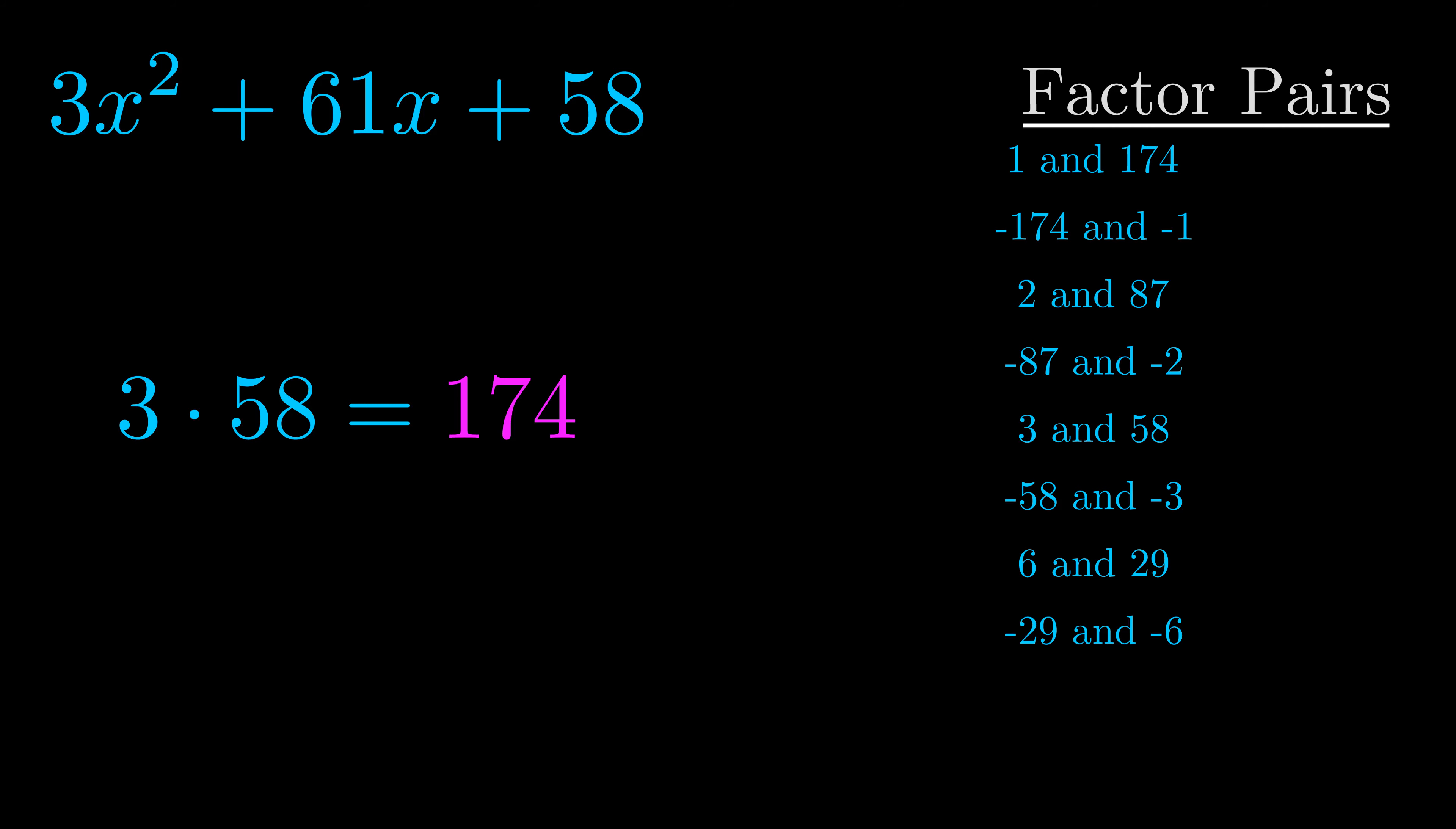The b value is the coefficient on the x term. That's the middle term, the one that we haven't done anything with yet. And really this is the only factor pair that we need.